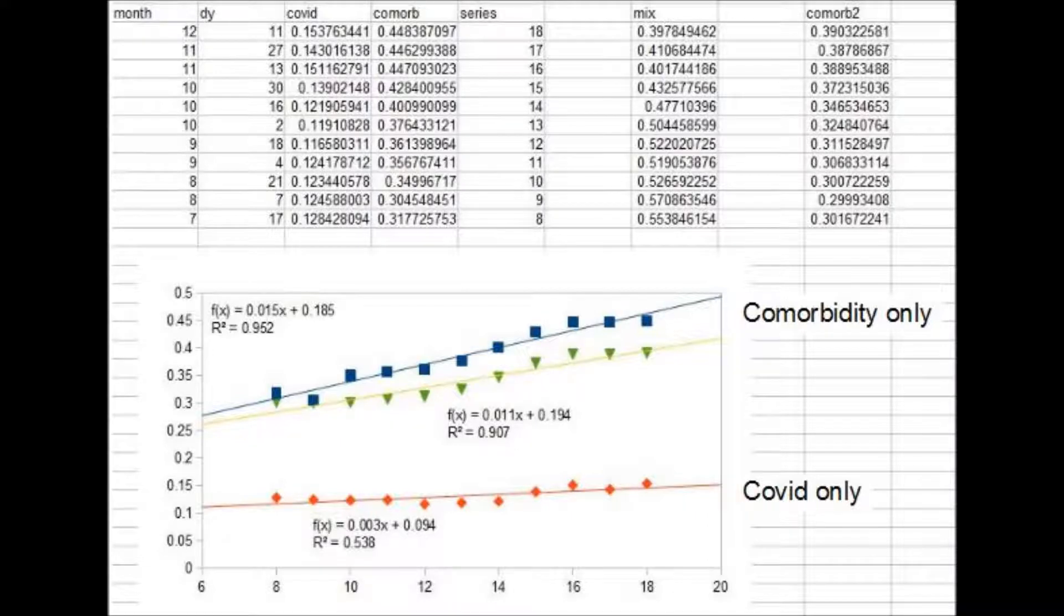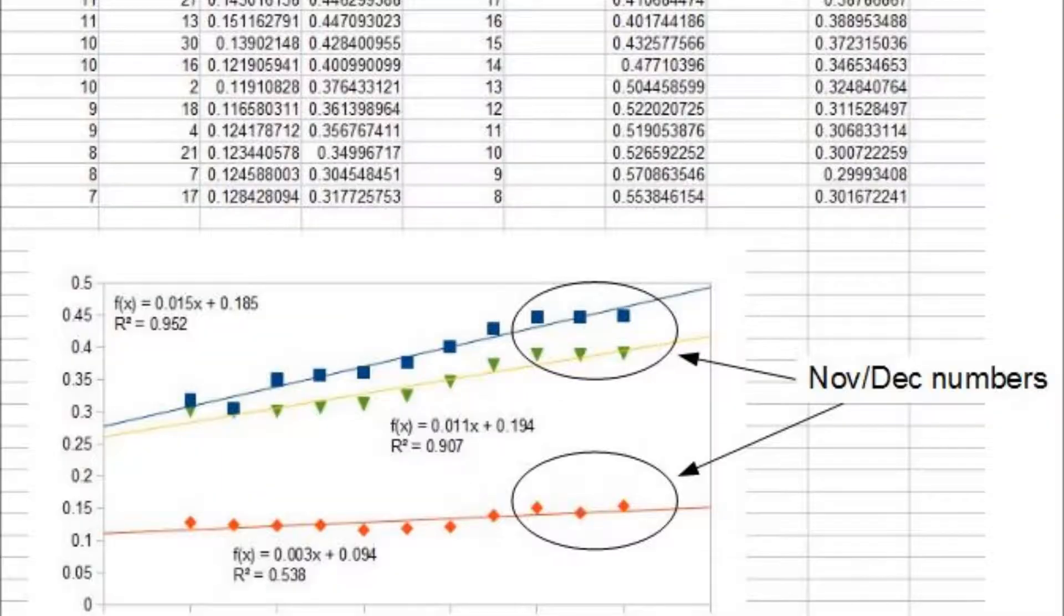The trend of the numbers continues to show comorbidity-only deaths increasing their share, while COVID only stays steady. However, the November and December comorbidity numbers appear to have reached a plateau. We shall see how these trends develop.